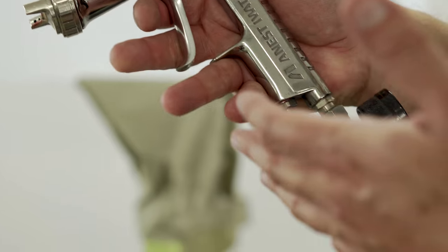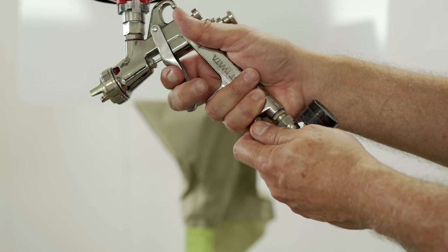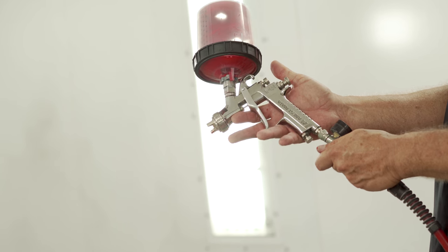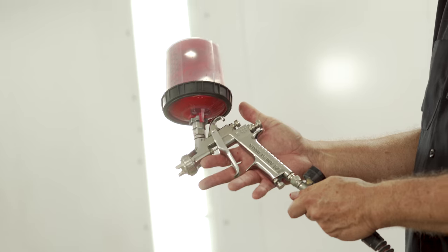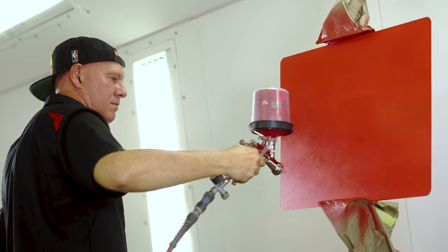With the pearls, set your gun at 20 to 24 PSI and maintain a 6 to 10 inch distance from the surface, with about a 6 to 12 inch fan pattern depending on the surface size. We're going to put one coat of the pearl down over our red sealer.